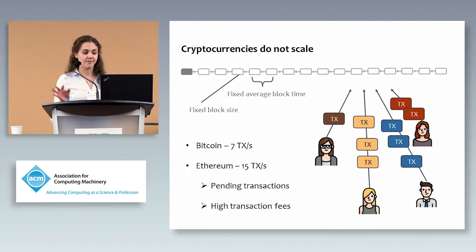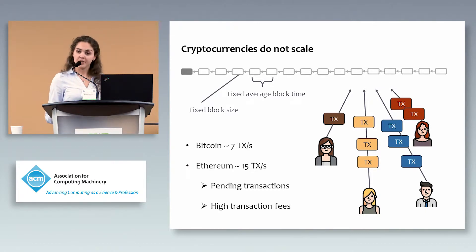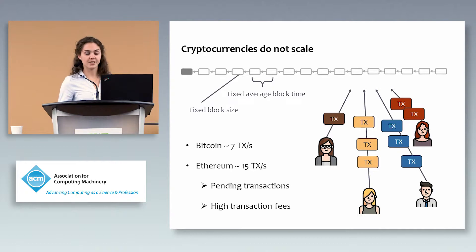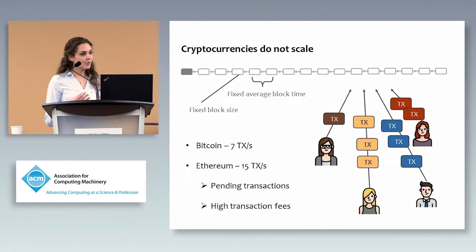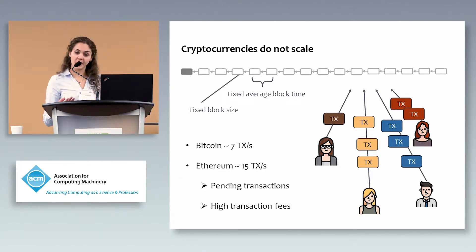Other cryptocurrencies have slightly different parameters, but the throughput is not sufficient if we want to use the system at large scale. From the user's point of view, it's simply way too slow and quite expensive.